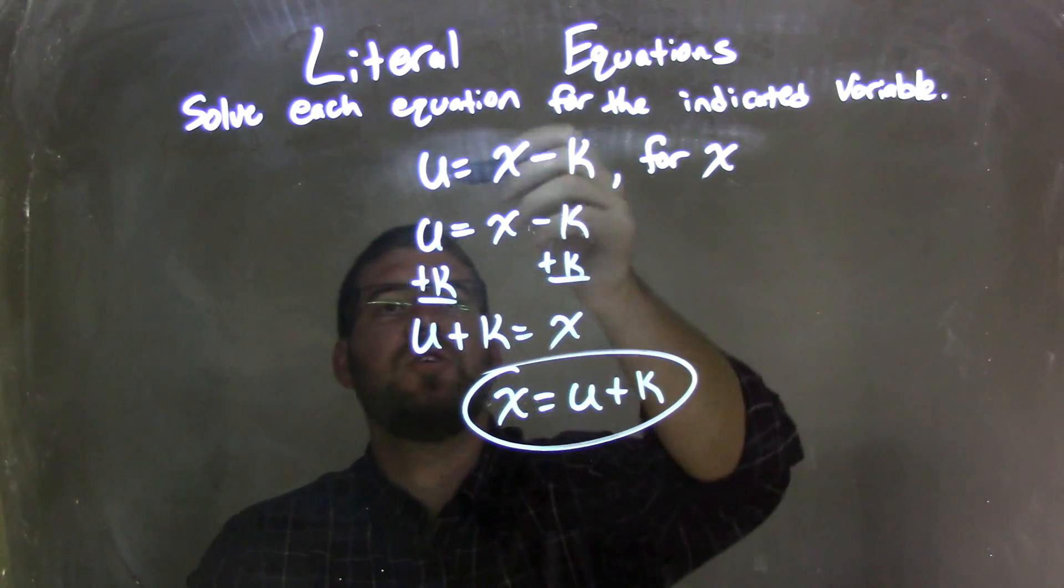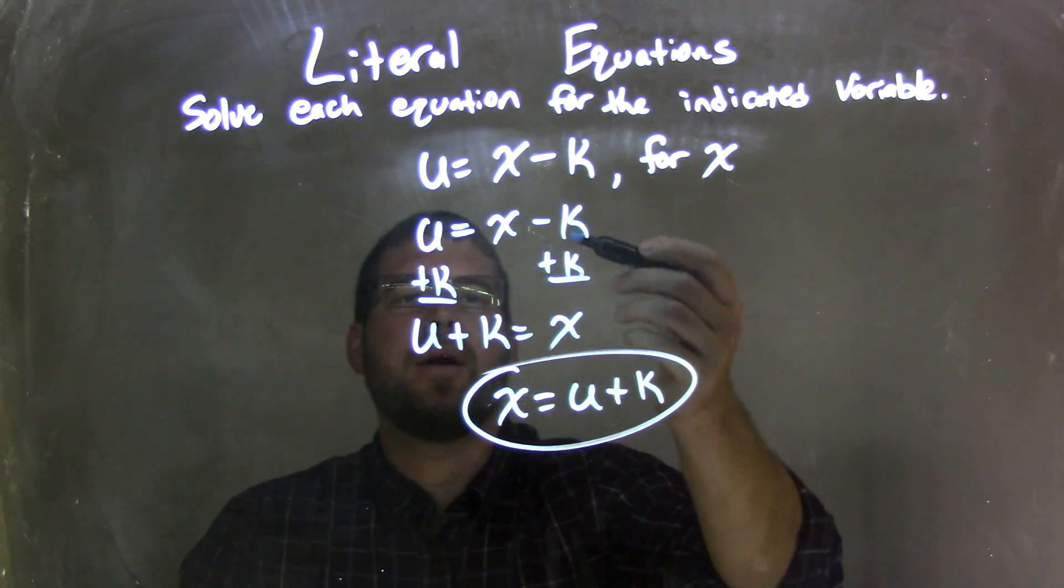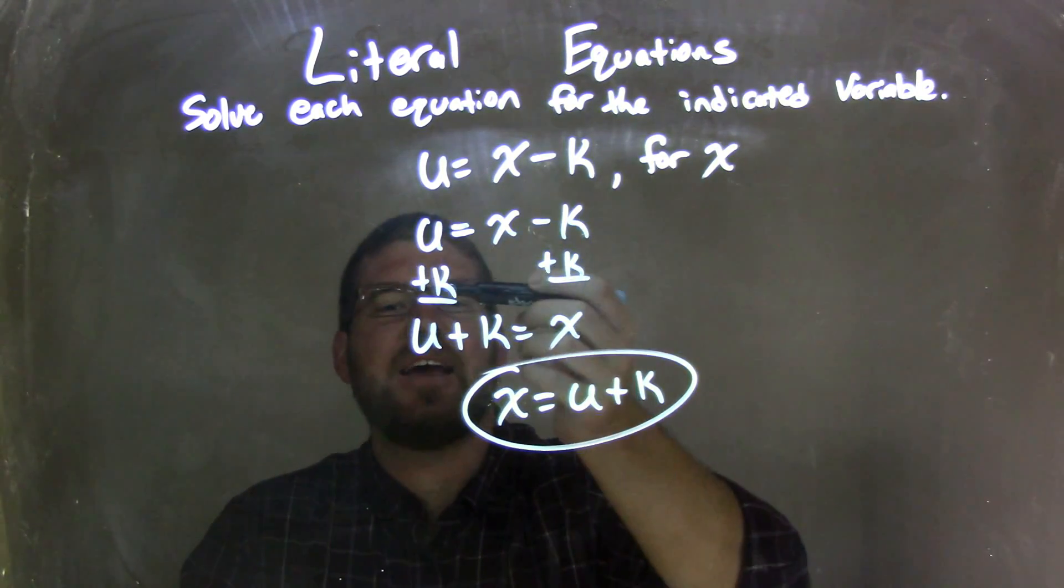So let's recap. We're given u equals x minus k, and we need to solve that for x. From there, I rewrote my equation and added k to both sides.